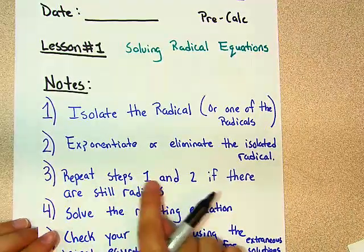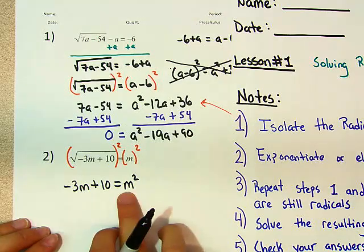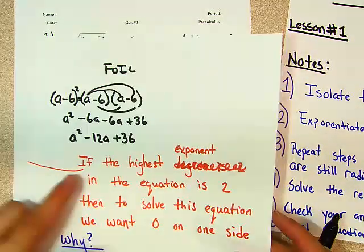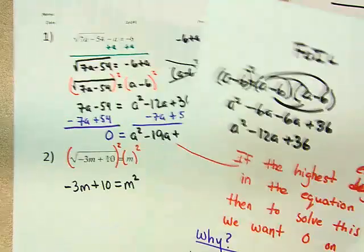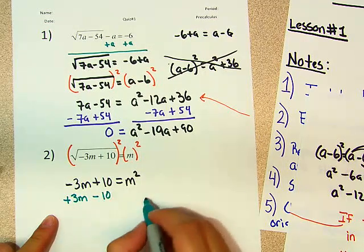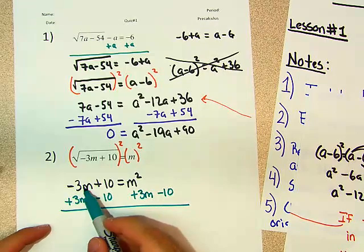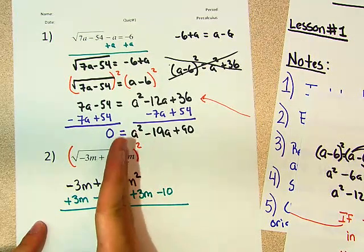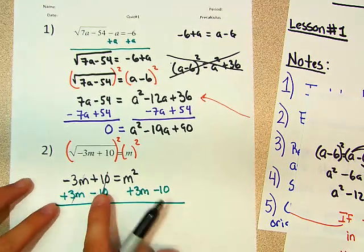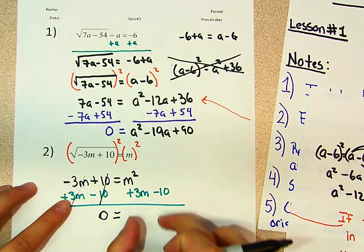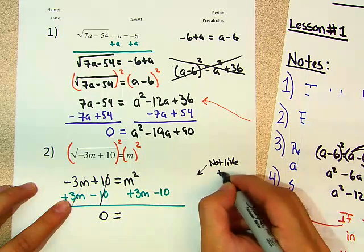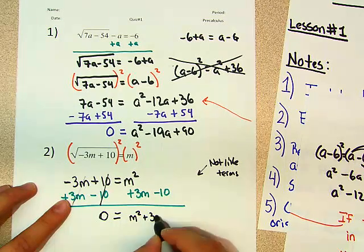It says repeat steps 1 and 2 if there are still radicals — there are no radicals. Solve the resulting equation. How do I solve this equation? The highest exponent is 2, so we want 0 on one side. To get 0 on one side, you would do plus 3m minus 10. Negative 3m plus 3m is 0. Positive 10 minus 10 is 0. Can we combine 3m and minus 10 to the m squared? No, they are not like terms. So then m squared plus 3m minus 10.